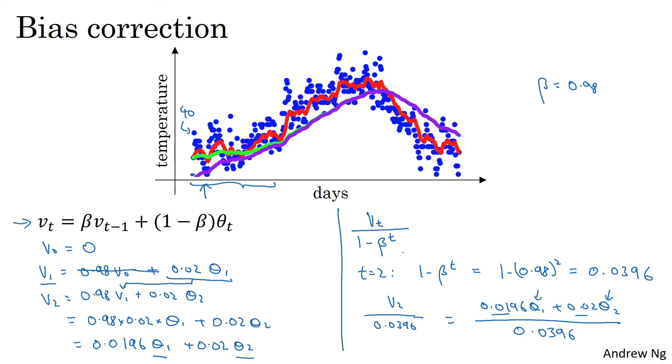So you notice that as t becomes large, beta to the t will approach 0, which is why when t is large enough, the bias correction makes almost no difference. This is why when t is large, the purple line and the green line pretty much overlap. But during this initial phase of learning, when you're still warming up your estimates, bias correction can help you to obtain a better estimate of the temperature. And it's this bias correction that helps you go from the purple line to the green line.